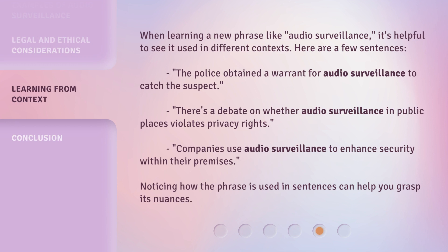When learning a new phrase like audio surveillance, it's helpful to see it used in different contexts. Here are a few sentences. The police obtained a warrant for audio surveillance to catch the suspect. There's a debate on whether audio surveillance in public places violates privacy rights. Companies use audio surveillance to enhance security within their premises. Noticing how the phrase is used in sentences can help you grasp its nuances.